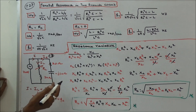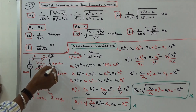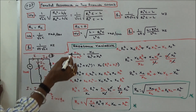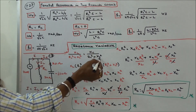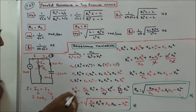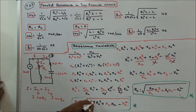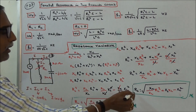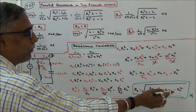Resistance variation in parallel resonance: by varying R_L or R_C, we can vary the resonant frequency. At resonance, X_L / (R_L² + X_L²) = X_C / (R_C² + X_C²). Solving for R_L: R_L = √((X_L/X_C)·R_C² + X_L·X_C − X_L²). Similarly, R_C = √((X_C/X_L)·R_L² + X_C·X_L − X_C²).